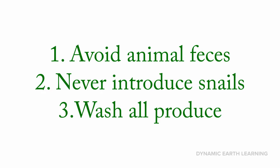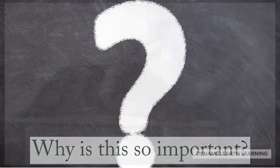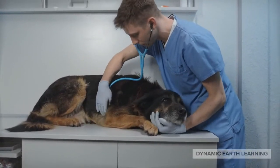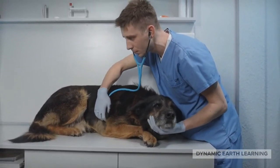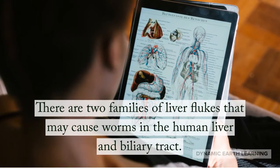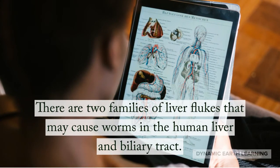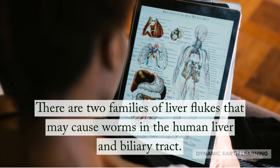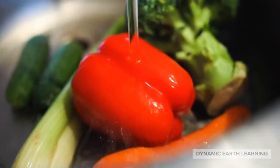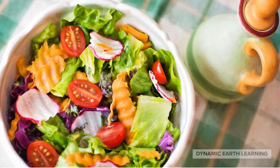Liver fluke infections cause serious medical and veterinary illness. They can produce either acute or chronic disease. There are two families of liver flukes that may cause worms in the human liver and biliary tract, which can lead to obstruction, liver, and gallbladder problems. Make sure to always wash fresh produce before consuming to be extra safe.